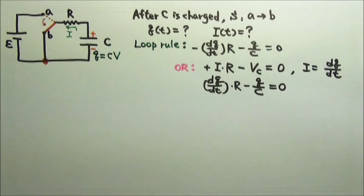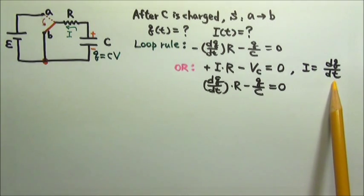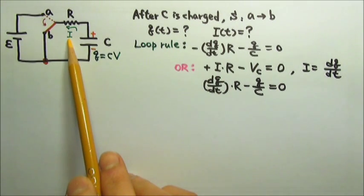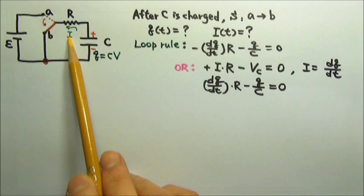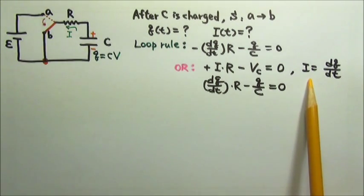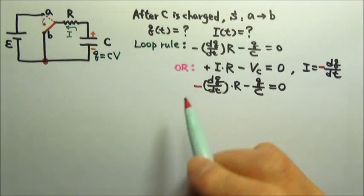However, during this charging, Q is decreasing. So dQ/dt is negative. But we know for sure that this is the correct direction for discharging current, so the current has to be positive. So we have to add a negative sign here to make our current positive.